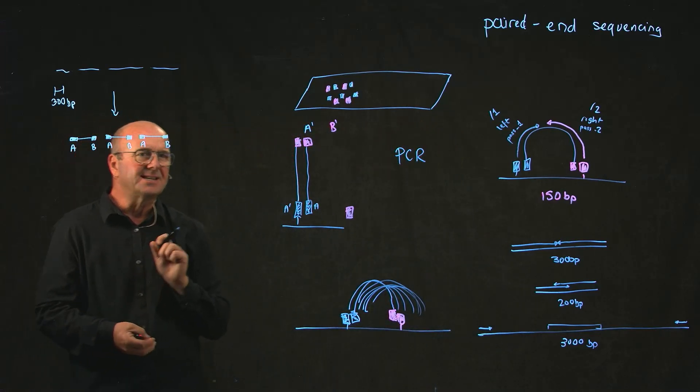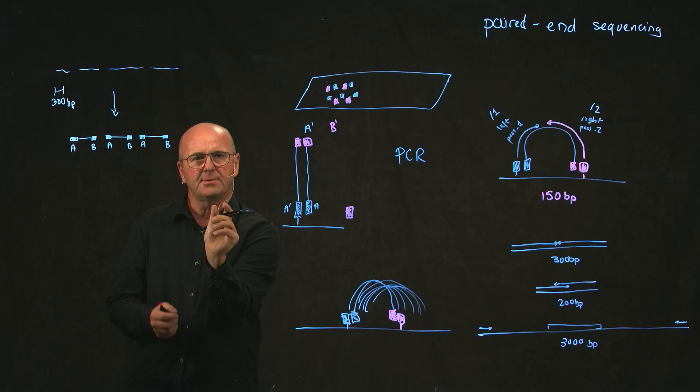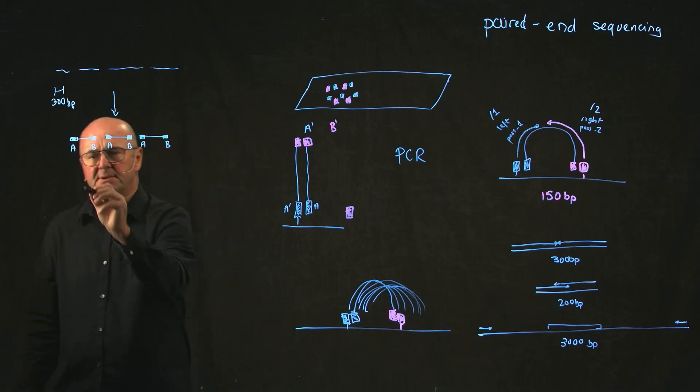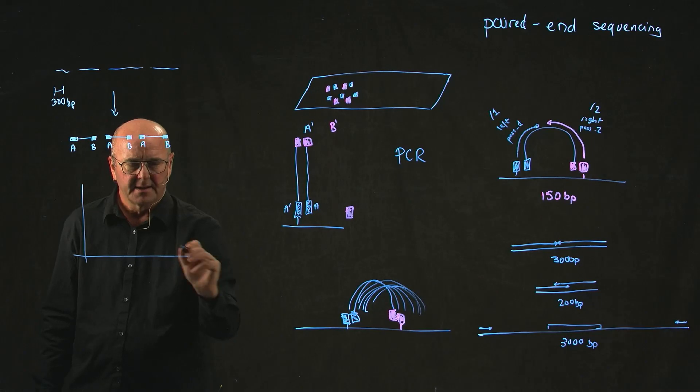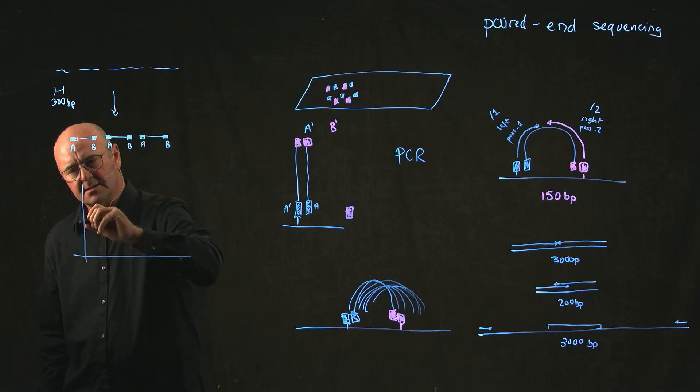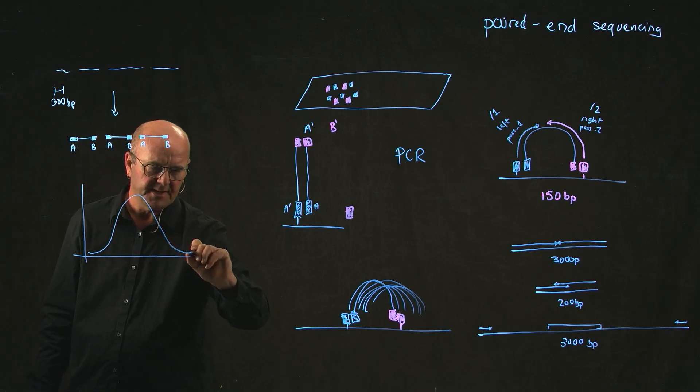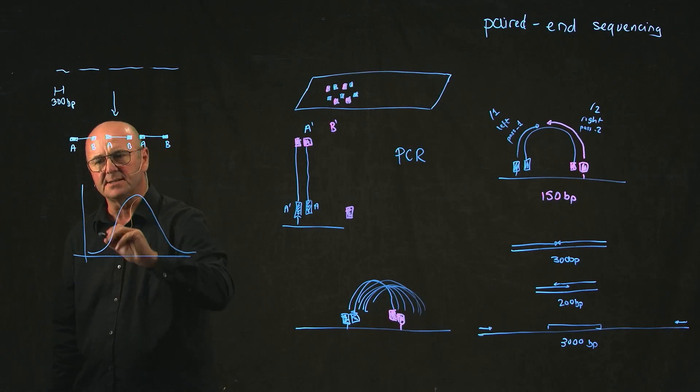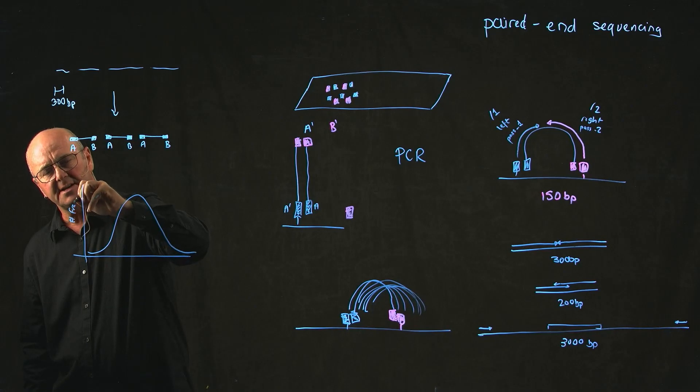I said that we can dial in how big we want our pieces of DNA to be, but actually when we do that, of course it's a little bit of biology, so you end up with a distribution of sizes. So this will be number of fragments of DNA.